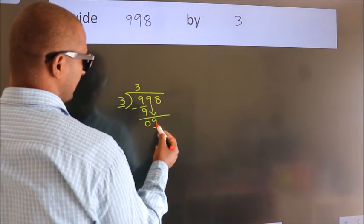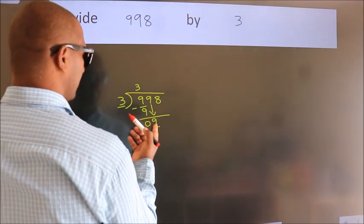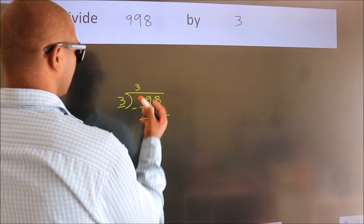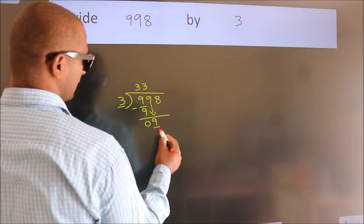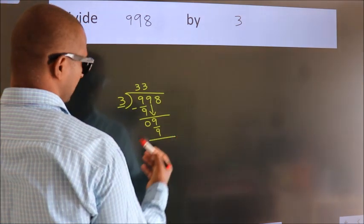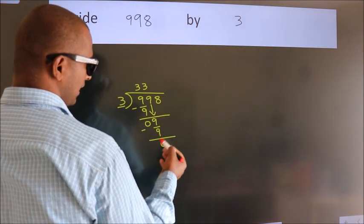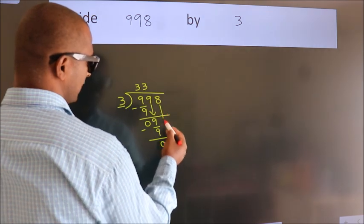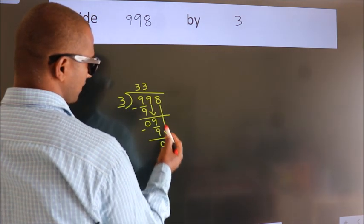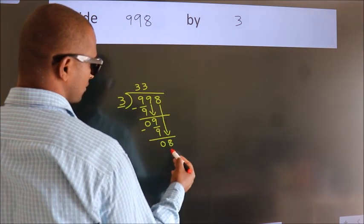Nine down. So nine, when do we get nine in three table? Three threes are nine. Now we subtract, we get zero. After this, bring down the beside number. So eight down.